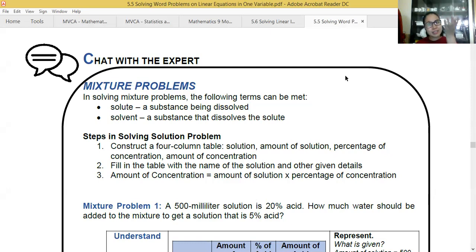For example, you have a glass of water and you place some salt in it. The water is the substance that dissolves. So we say the water is our solvent. And salt, which is being dissolved, is called the solute.